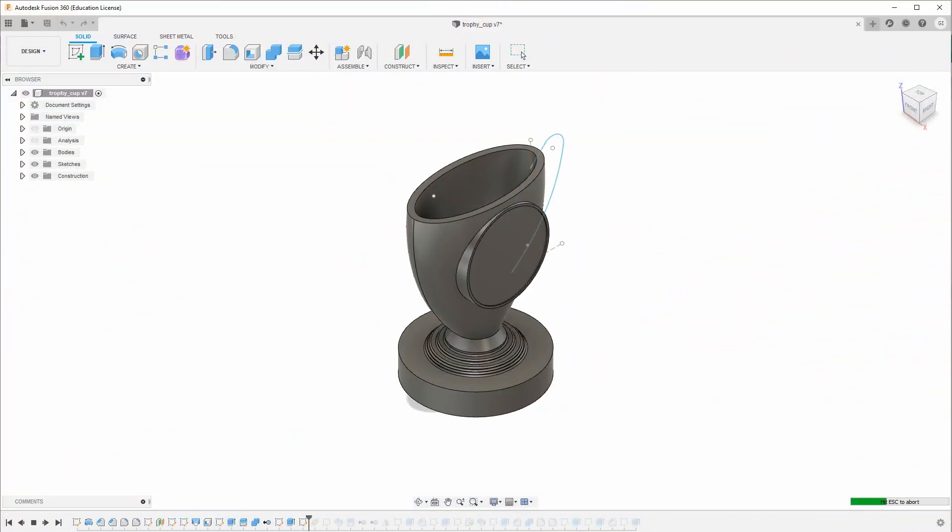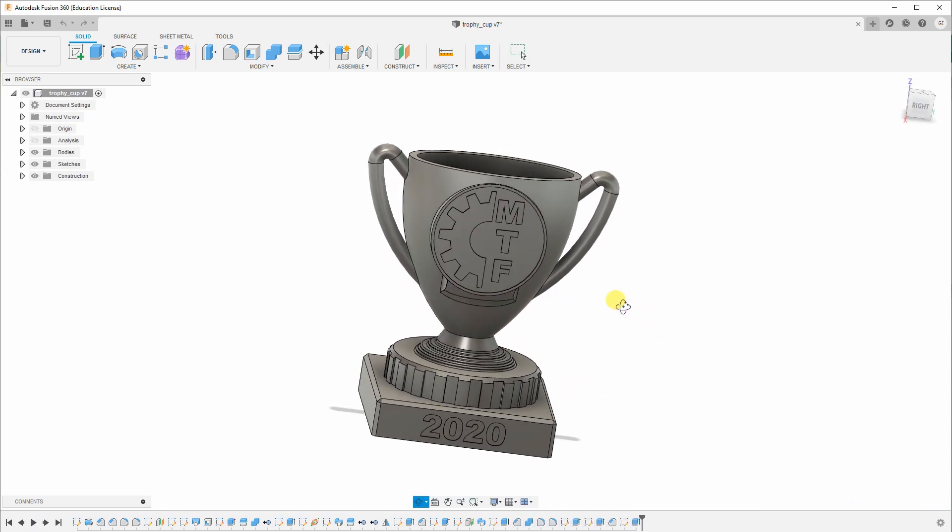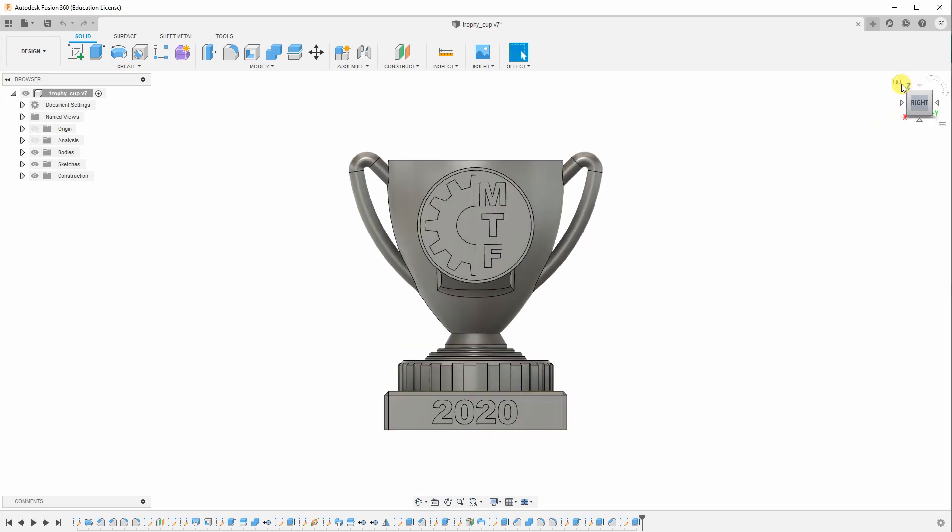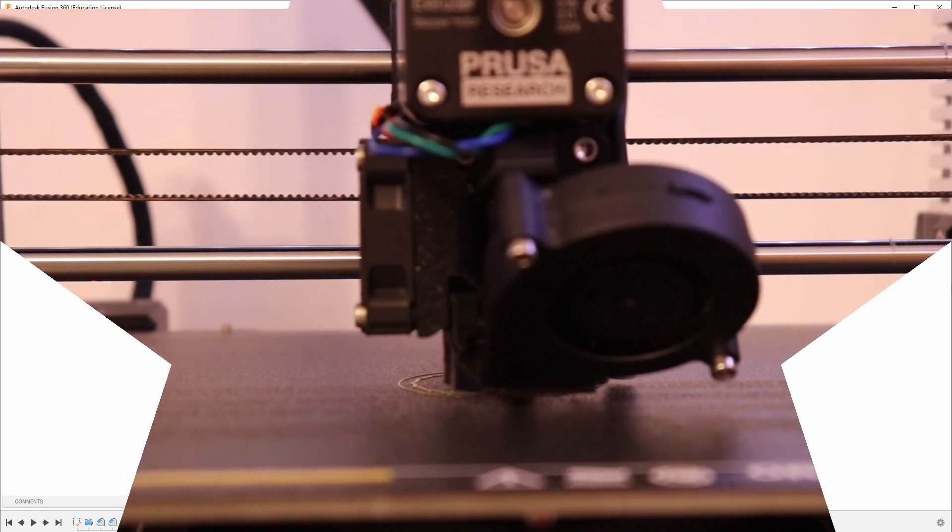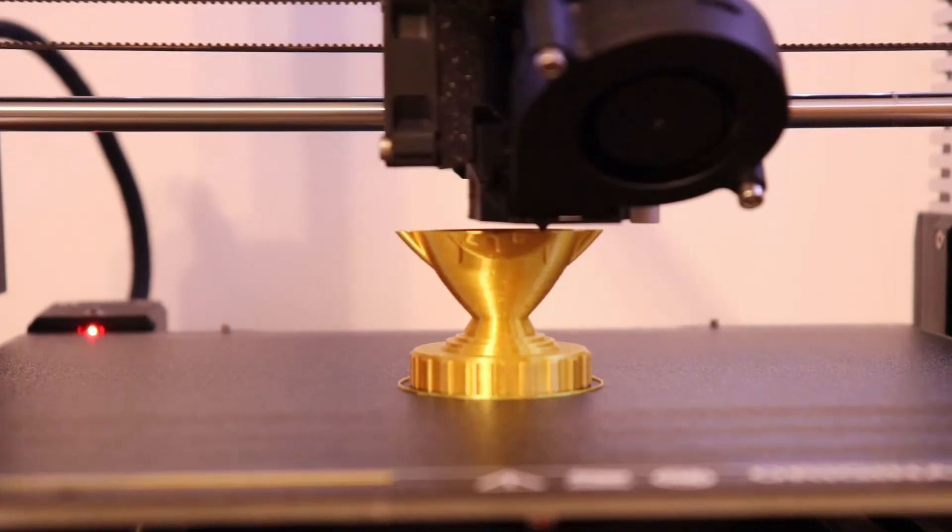And these are my design steps in Fusion 360. I will upload the STL file to my website so you can download it. And that version will not have this logo, so you can modify it even with Tinkercad, for example, to add your logo or some different text.